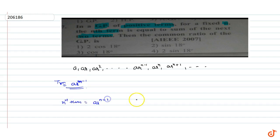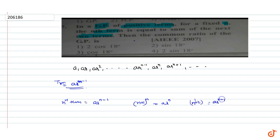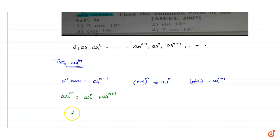So the nth term is a·r^(n-1). The next two consecutive terms are the (n+1)th term, which is a·r^n, and the (n+2)th term, which is a·r^(n+1). We are given that a·r^(n-1) is equal to a·r^n plus a·r^(n+1).